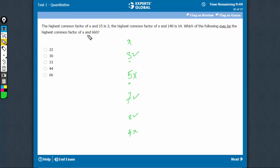Which of the following may be the highest common factor of x and 660? 660 has a 3 in it, so the HCF must have a 3. 660 has 4 in it, which means that 4 should not be there but there should be a 2 in it.